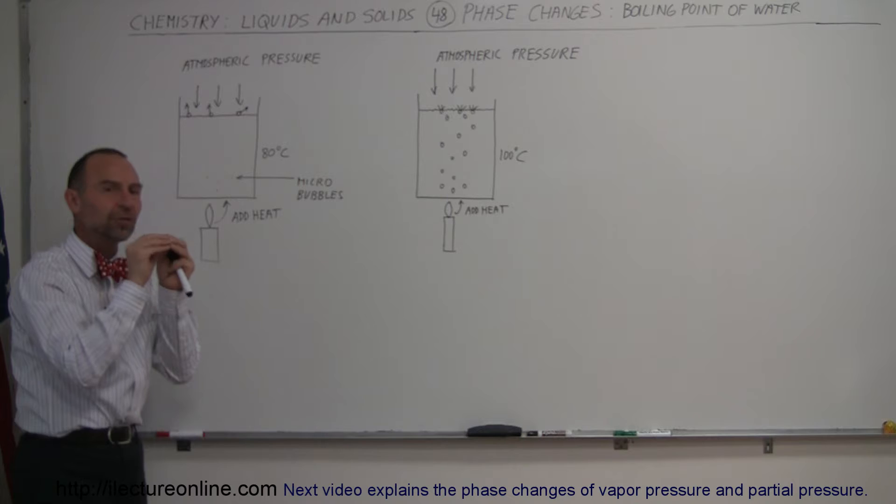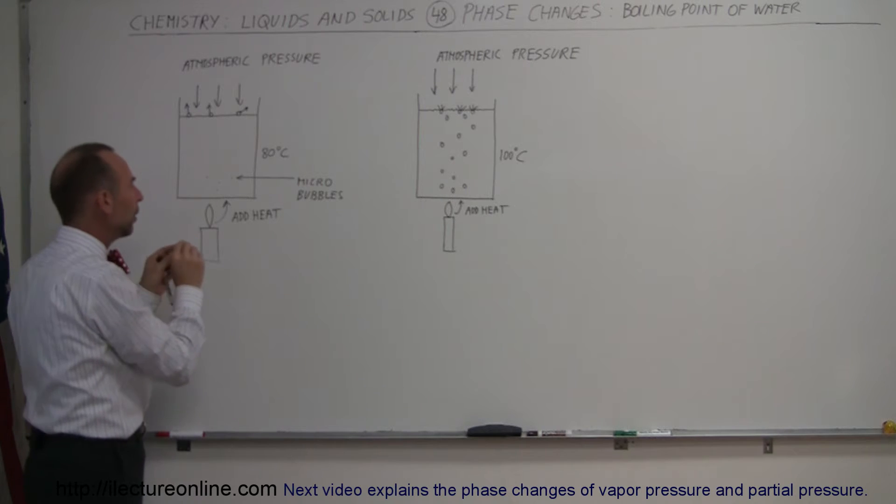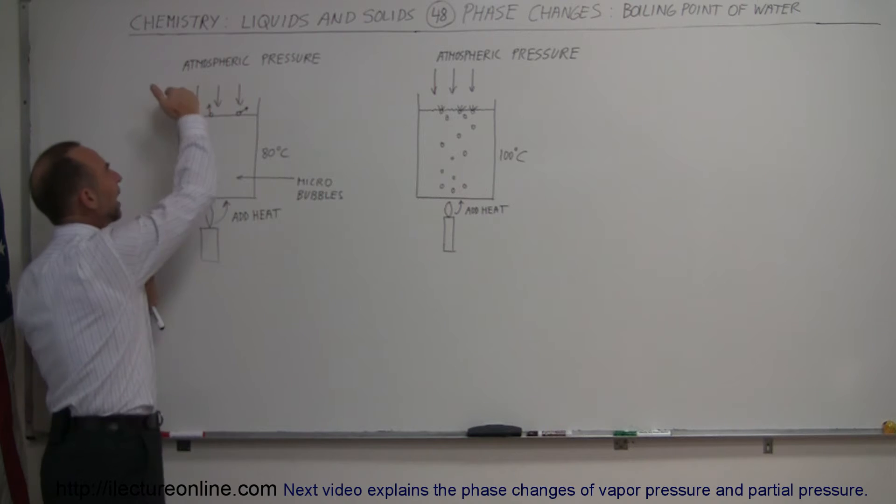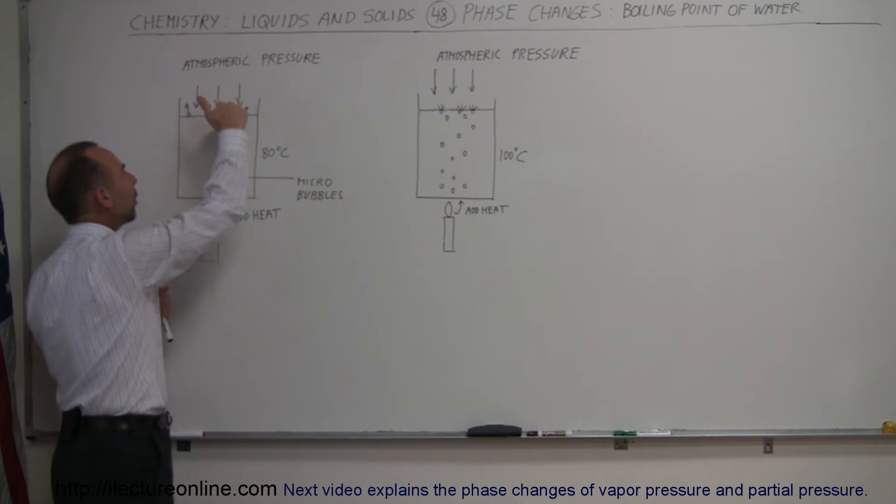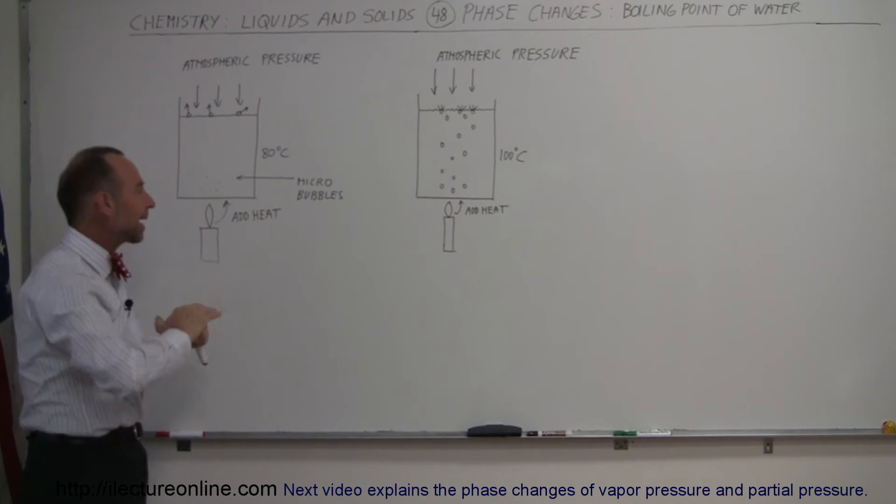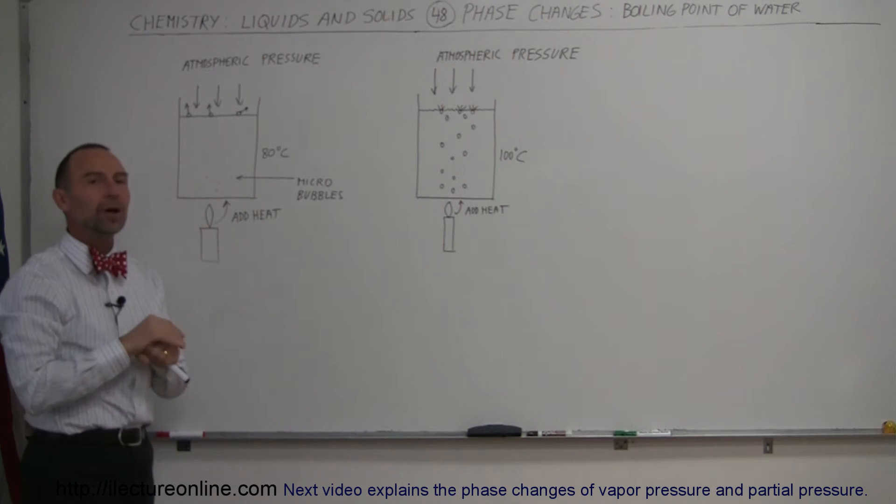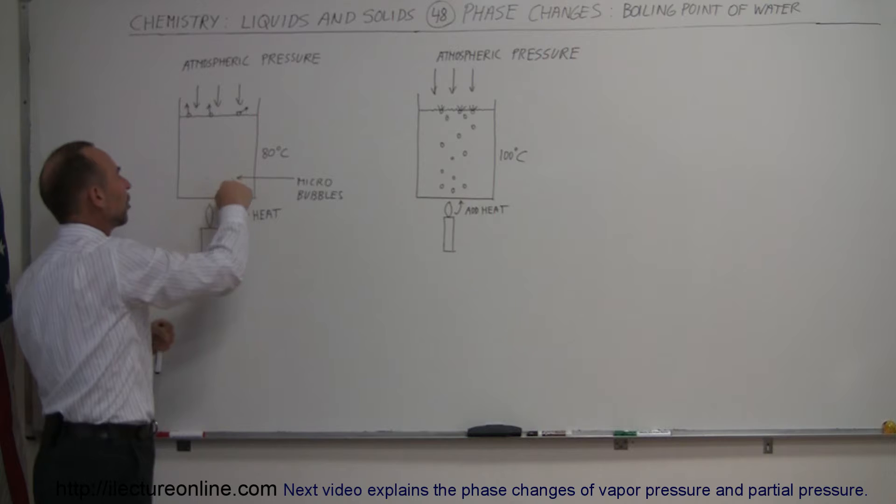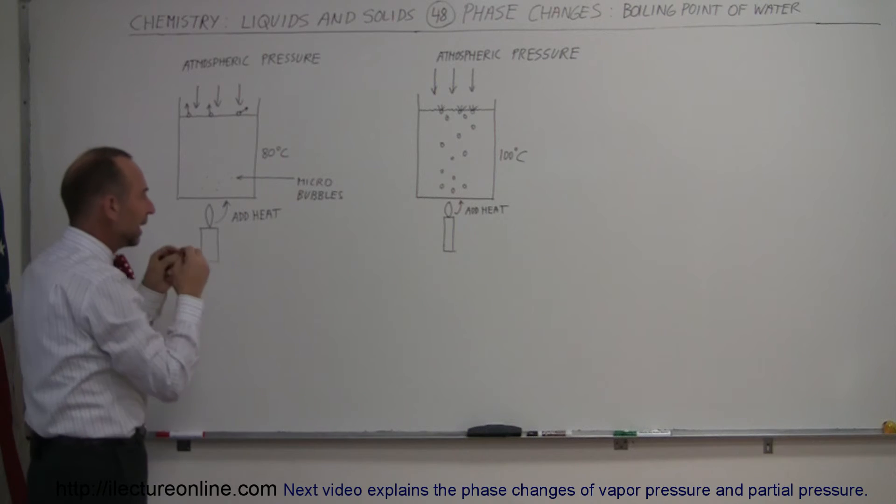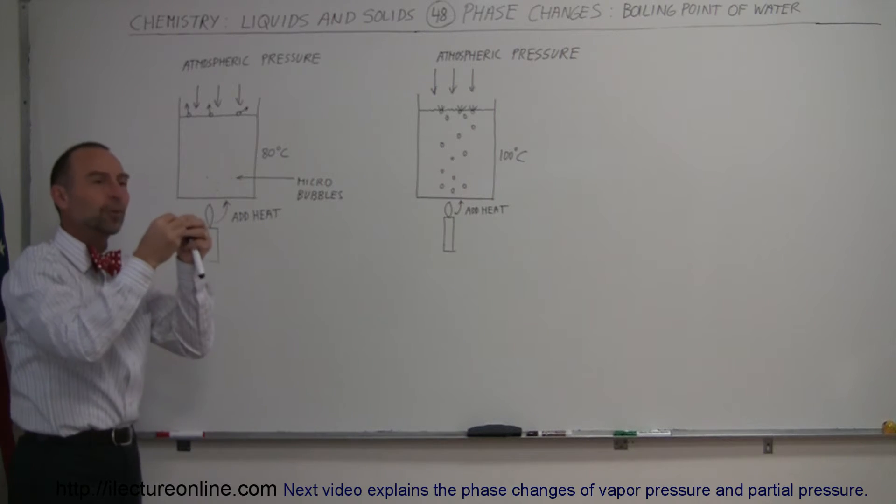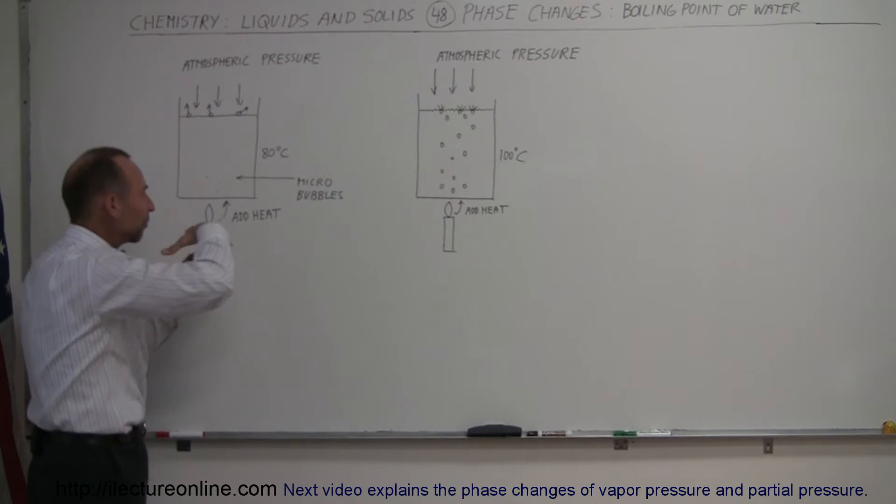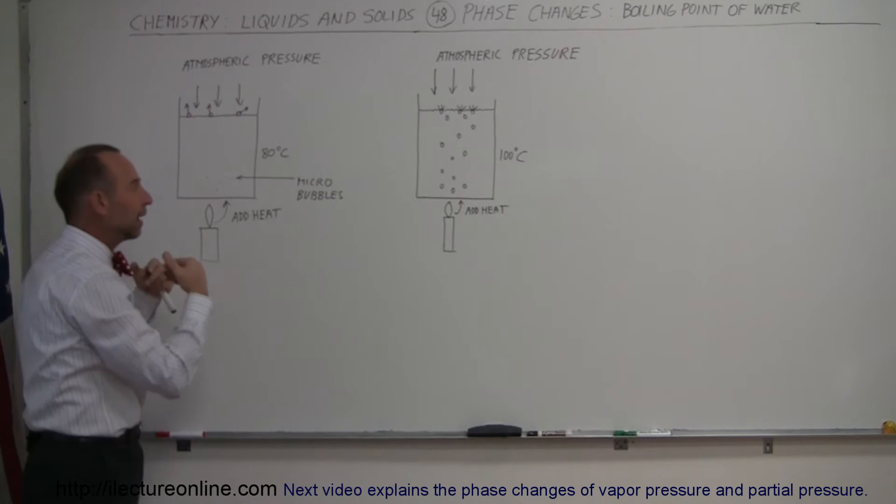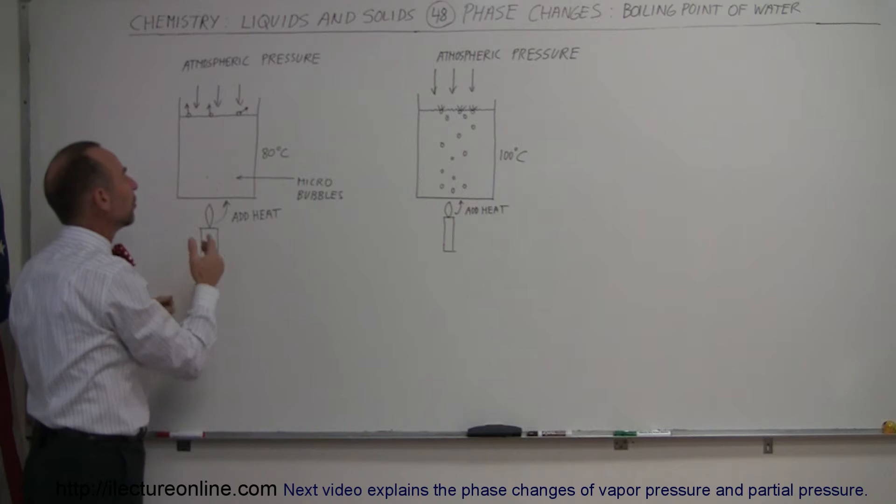These are little regions within the water where the water wants to turn into vapor. However, atmospheric pressure pushes down on the water and causes these micro bubbles to be squished back down into water. The atmospheric pressure doesn't allow these bubbles to form and blossom. Any time a few molecules try to form a micro bubble, atmospheric pressure squishes it back down, preventing the water from beginning to boil.